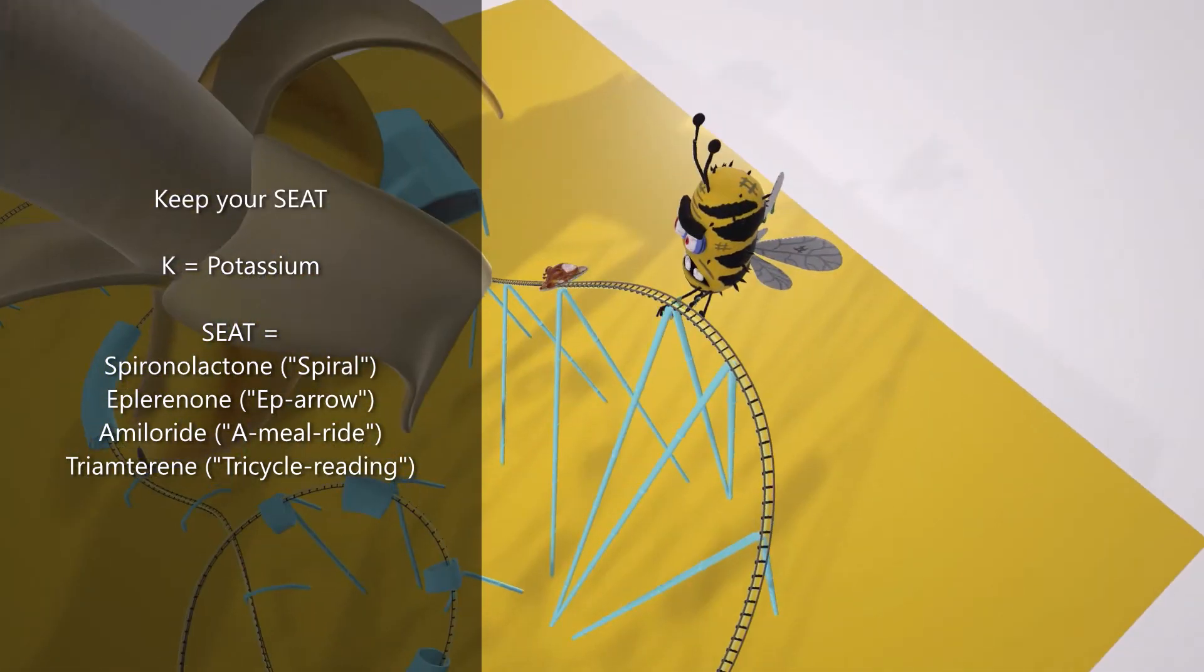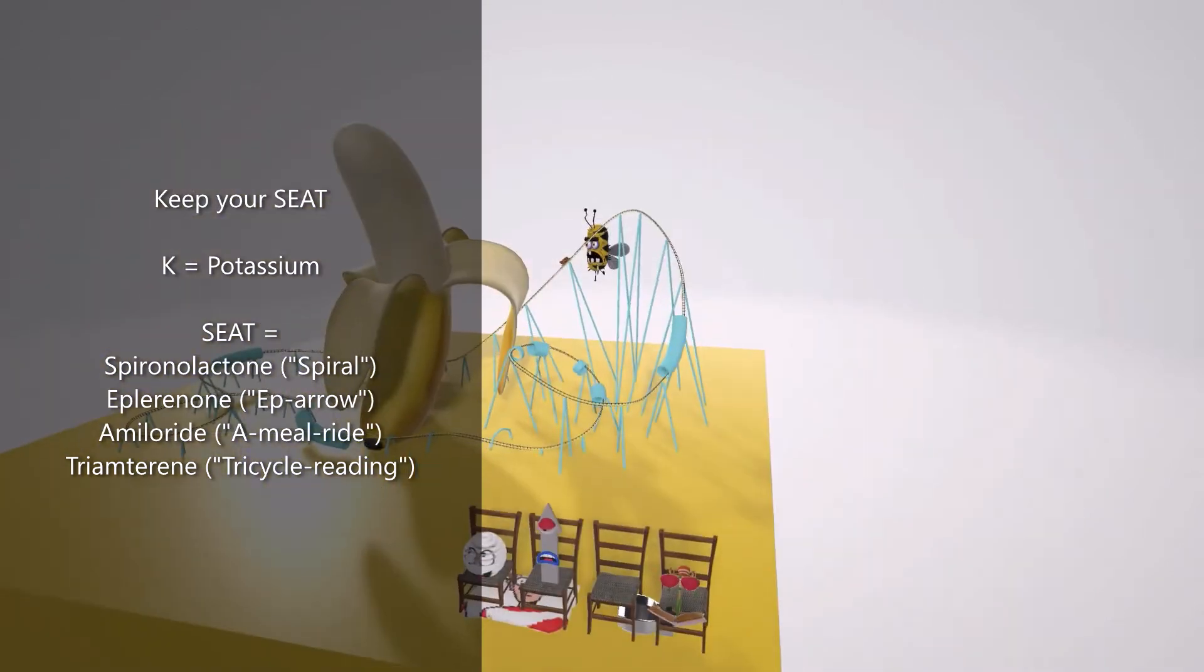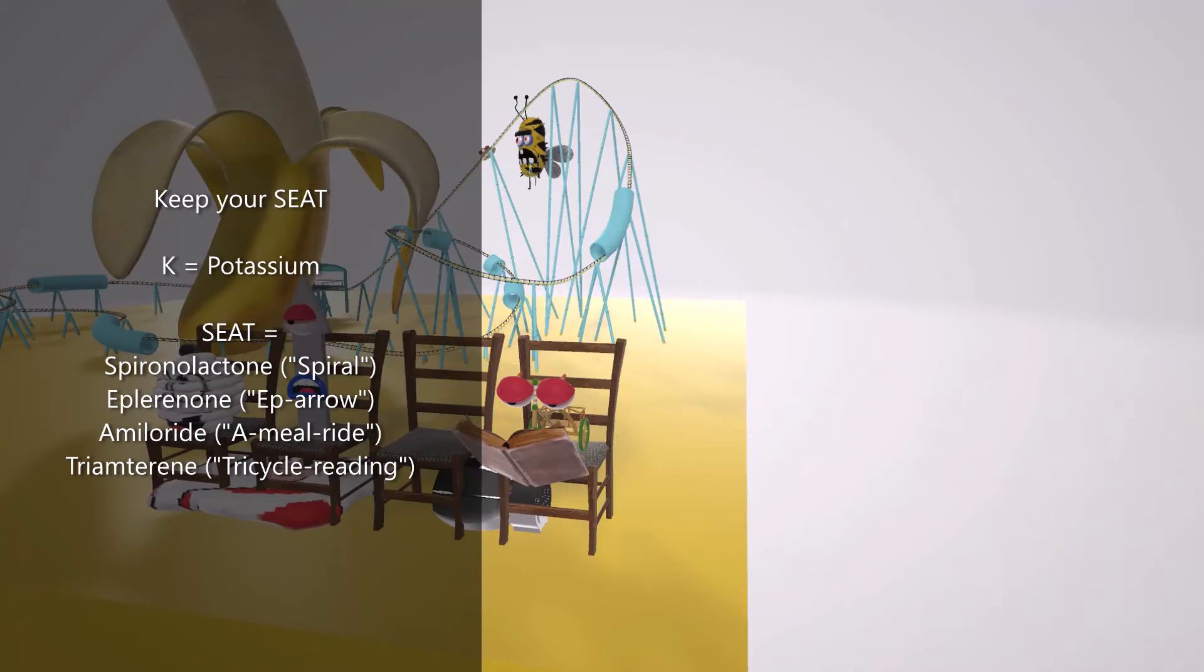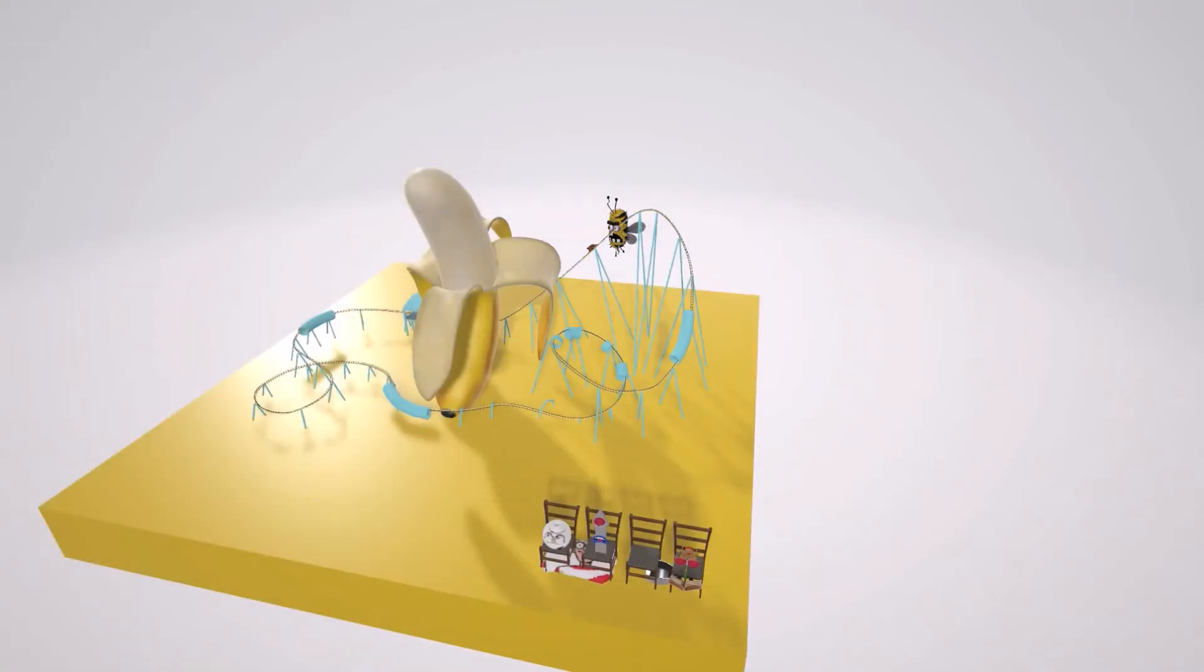This is the meal on a ride. Meal on a ride for amiloride. And we're going to explain why there's this scary insect guy next to him. And finally, we have the tricycle over here that's reading. Tricycle that's reading, or tri that's reading for triamterene. So let's begin.